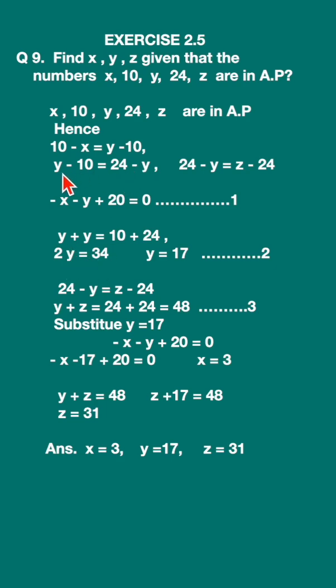2y is equal to 34, y is equal to 17. So you already found out y is equal to 17. And this third equation, let us write it down. Simplify it, you will get y plus z is equal to 48.